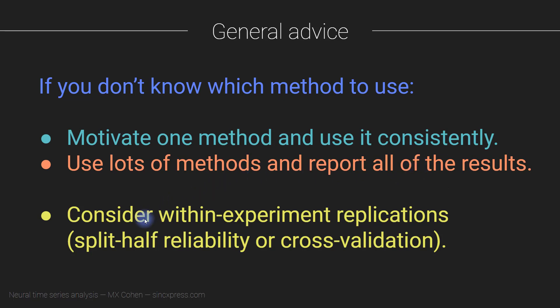And then yet another possibility, which is kind of related to these two, is to do within-experiment replications, also sometimes called split-half reliability or cross-validation. The idea would be, for example, imagine that you have 40 data sets. Then what you can do is take 10 of those data sets, you pick 10 data sets at random, and you try a bunch of different methods, a bunch of different parameters, all sorts of wacky things.